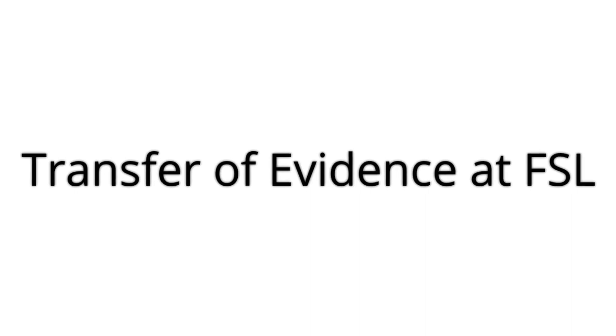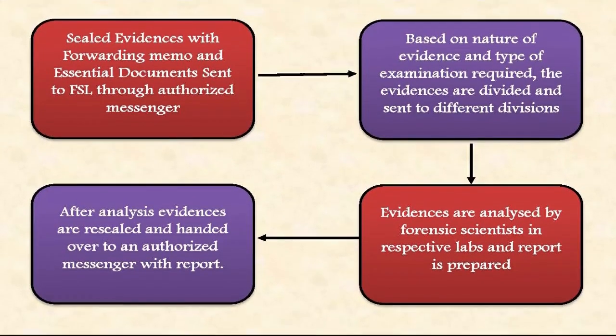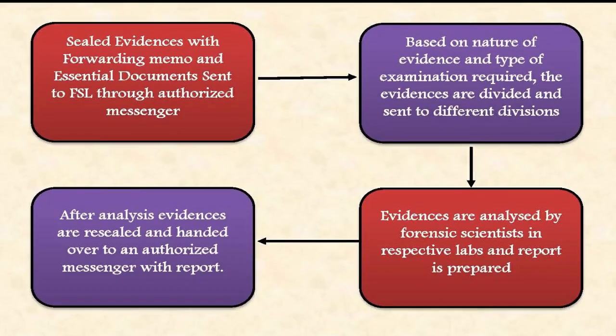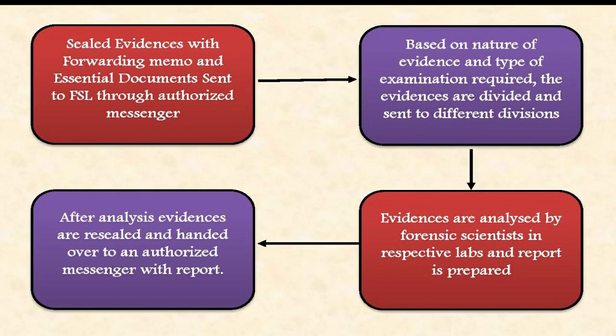Transfer of evidence at forensic science laboratory: sealed evidence along with a forwarding memo mentioning details of evidence and query from the investigating officer, as well as essential documents, are all sent to FSL through an authorized messenger. Based on the nature of evidence and type of examination required, the evidences are divided and then sent to different divisions. Evidences are then analyzed by forensic scientists in respective labs and a report is prepared mentioning observations and opinion of the expert answering the query asked in the forwarding memo.